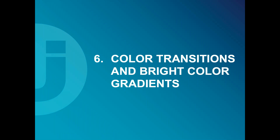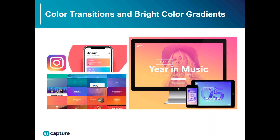Moving on to number six, this is actually a personal favorite — gradients. Some of the most recent examples are Instagram's logo redesign, which uses a really bright gradient in its primary version, and Spotify with their bright colors and gradients used in just about all of their graphics — playlist graphics, promos, pretty much everything has these really bright colors.